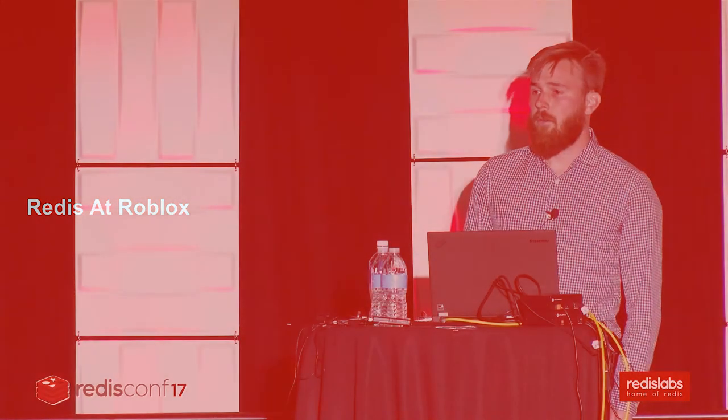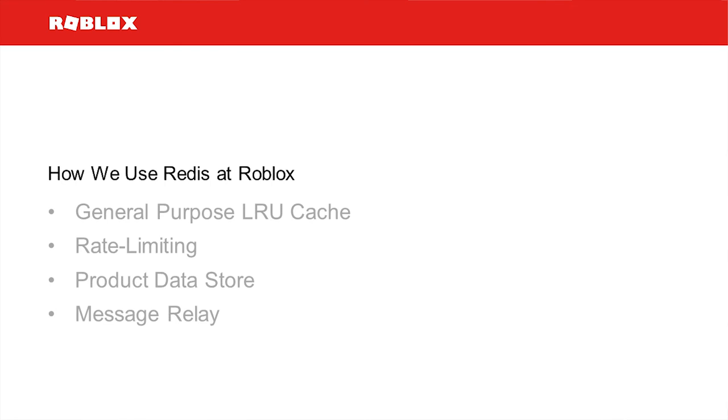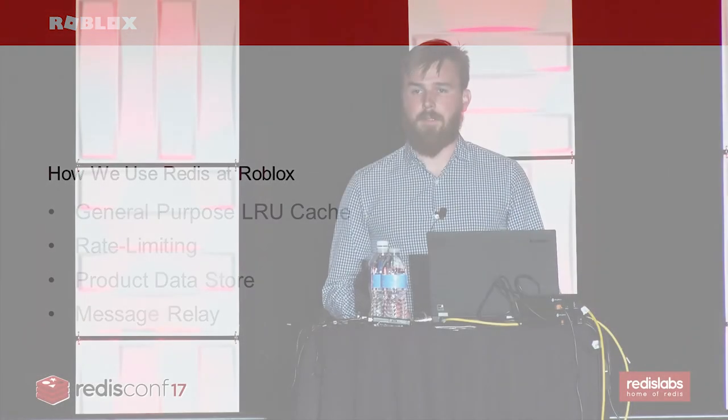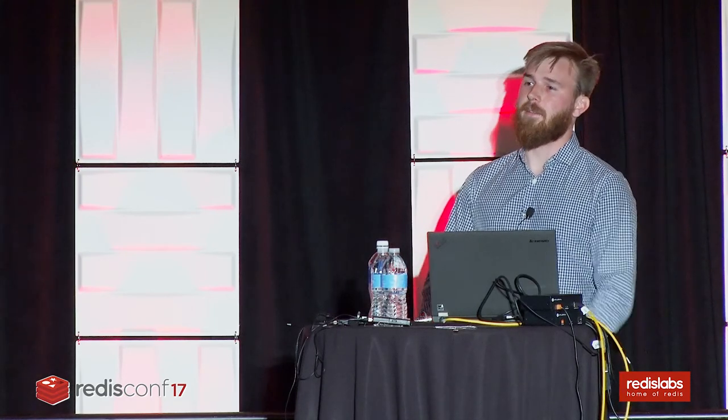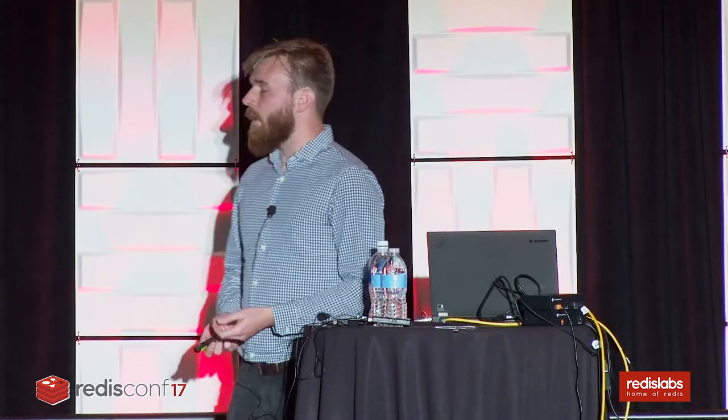We're big fans of Redis at Roblox and use it in a number of places. We use it as a general purpose LRU cache. For a lot of new product features, Redis is one of the first options we consider when thinking about how we're going to store data, particularly during prototyping. We use it extensively for rate limiting — with a large social platform encouraging creative users, sometimes they abuse endpoints in ways that aren't ideal for us. And we use Redis as a message relay, which is the main focus of today's talk.